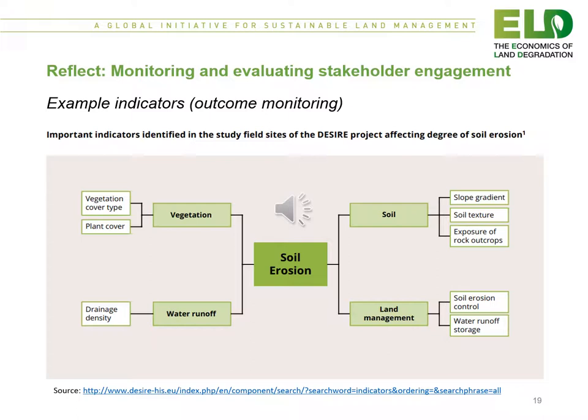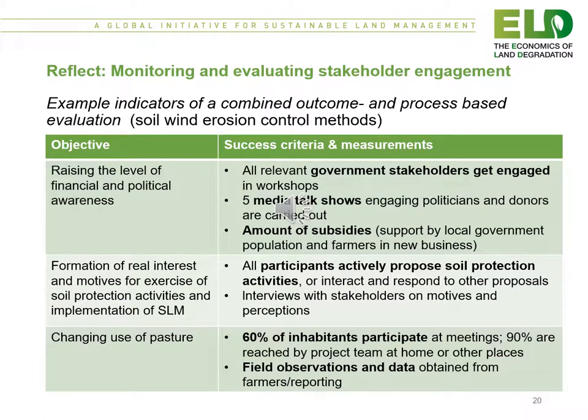This figure gives examples of indicators used in a project where soil erosion was being monitored and reversed — the indicators used appear in the white boxes. This table shows an example of indicators used in a combined outcome- and process-based evaluation, in this case for soil wind erosion control methods. The indicators are listed under the success criteria and measurements.